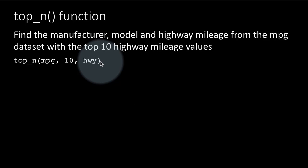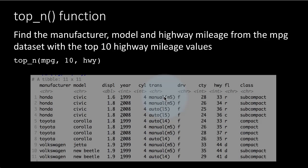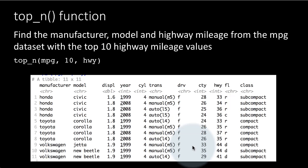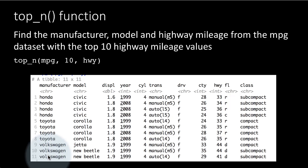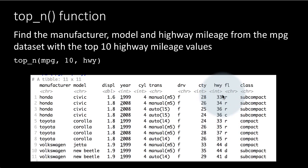We're not asking it to order the result or anything like that. What you get back is the highway mileage values which are all in the top 10. One thing you'll notice is that you've actually got 11 values. That is because there is probably a tie for the 10th value — the lowest value is 33 and there are two 33s. So both the 10th and 11th cars have a highway mileage of 33, so it doesn't break the tie, it just gives you all of the values.